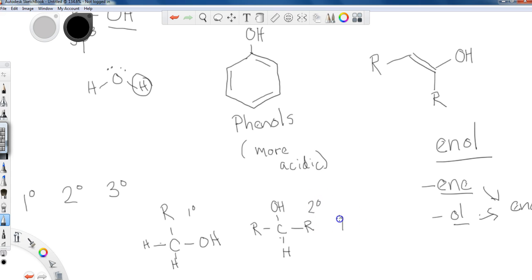And then finally, we can have tertiary alcohols where we've got three surrounding R groups. And we've got the alcohol group, and that would be a tertiary alcohol. Okay, so primary, secondary, and tertiary alcohols, all potential alcohol functional groups.